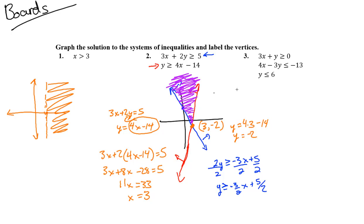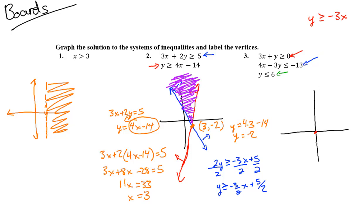For problem three we have three inequalities, so we'll use three colors: red, blue, and green. The red one: 3x + y ≥ 0. Solving for y gives y ≥ -3x. It passes through the origin with slope -3 — a solid line. Since y ≥, we shade above this line.